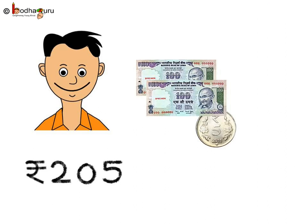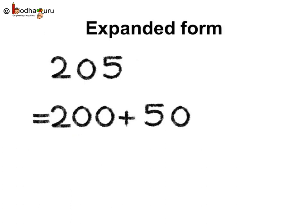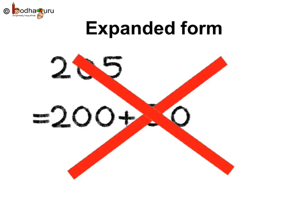Aman had 205 rupees. Write 205 in expanded form. Expanded form is easy, so you may quickly write it as 200 plus 50. But this is wrong.